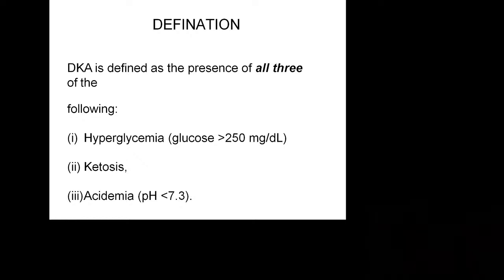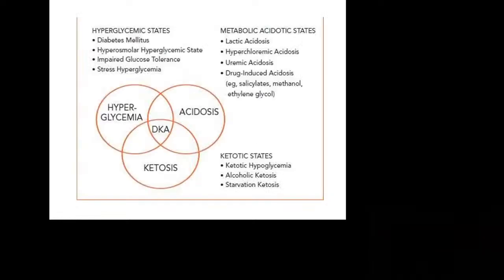DKA is defined by the presence of all three criteria: hyperglycemia — glucose more than 250 mg/dL; ketosis — presence of ketones in urine and blood; and acidosis — pH less than 7.3. When all three criteria are present, then and only then can you diagnose diabetic ketoacidosis.